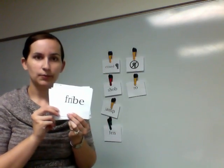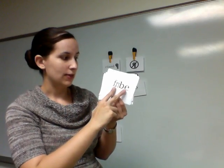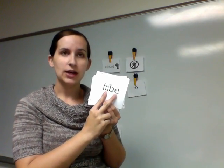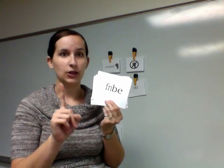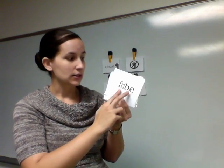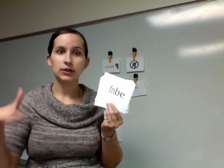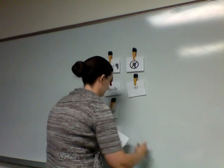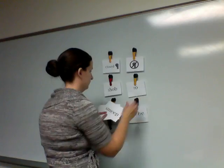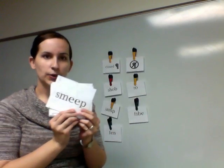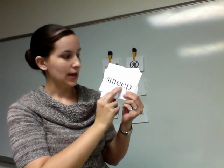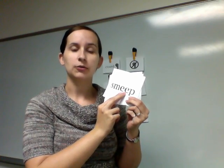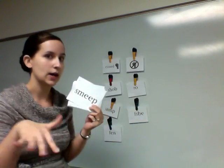Here's another word. When I find the vowel, I notice that there is not one vowel. A closed syllable has one vowel followed by one or more consonants. Since there is more than one vowel, this one is not closed. On this next word, I start by finding the vowels and I notice that there are two vowels. Because there is not one vowel followed by one or more consonants, this one is not closed.